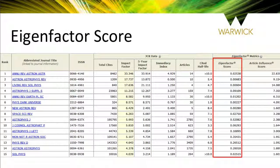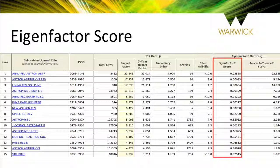The eigenfactor score is a metric that establishes the journal's importance. It is calculated by the number of times an article from a journal published in the past five years has been cited in a JCR year.